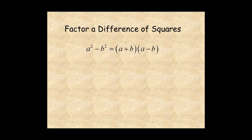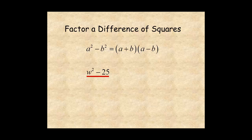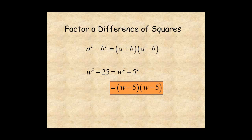You can turn this around and factor a difference of squares. For example, w squared minus 25 is w squared minus 5 squared, which factors as w plus 5 times w minus 5.